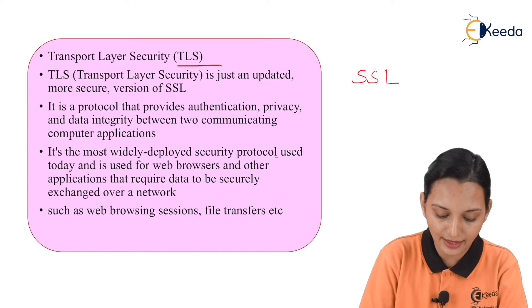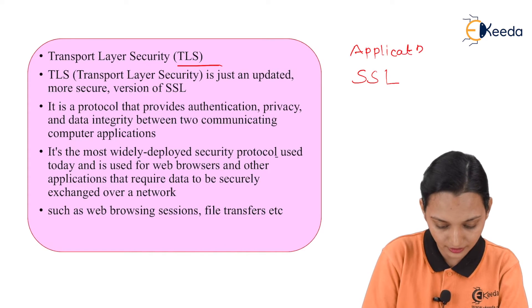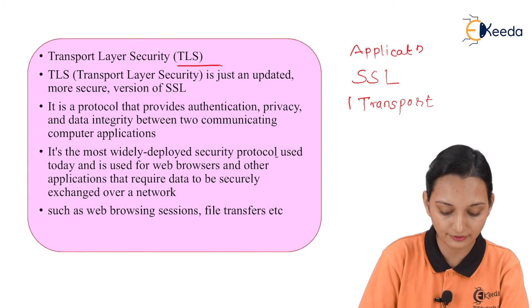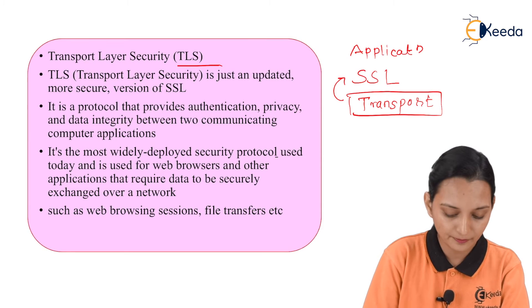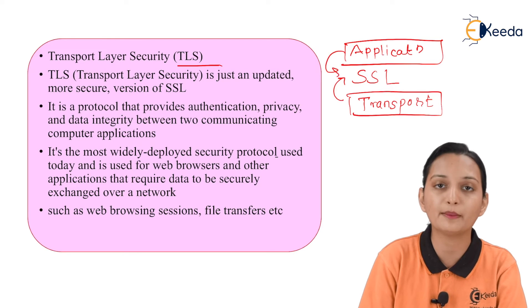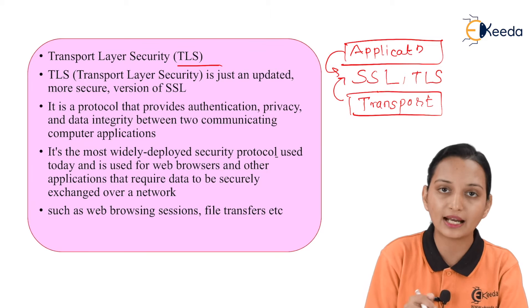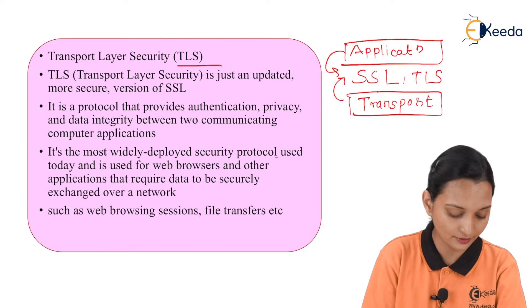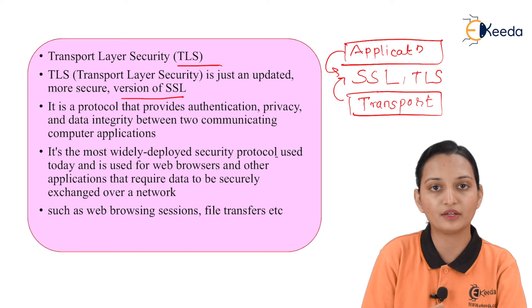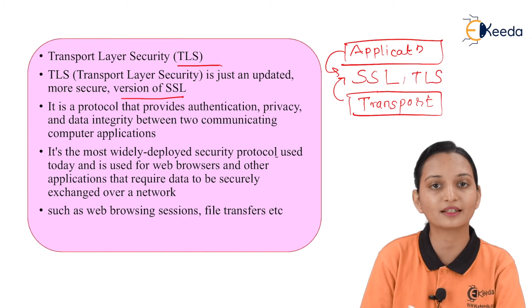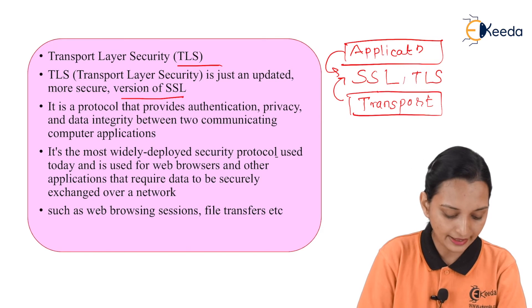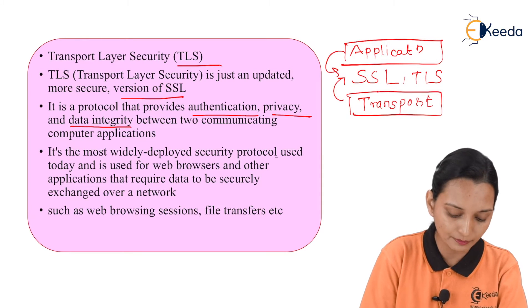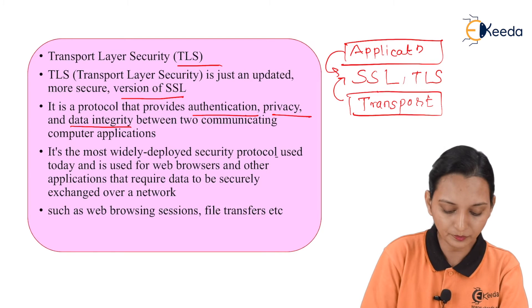We have already seen that SSL lies between the Application Layer and the Transport Layer. If we require to show the position of SSL, we can show it like this — after the Transport Layer and before the Application Layer. TLS is also situated in the same place, because TLS is the updated and more secure version of SSL. Whatever drawbacks SSL has, those can be overcome with the help of TLS. It is a protocol that provides authentication, privacy, and data integrity between two communicating computer applications.